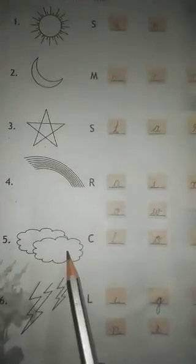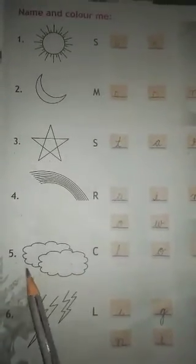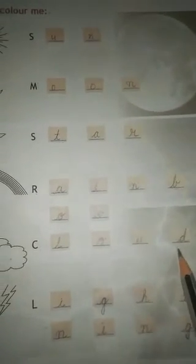So you write R-A-I-N-B-O-W Rainbow. Number five, we have Clouds. What is this? This is Clouds.